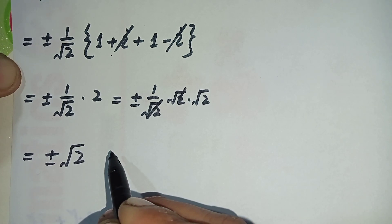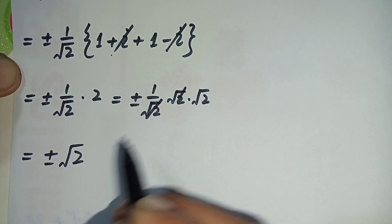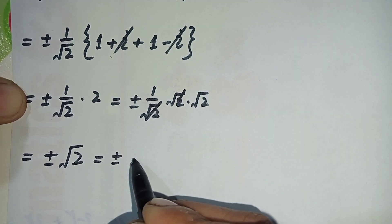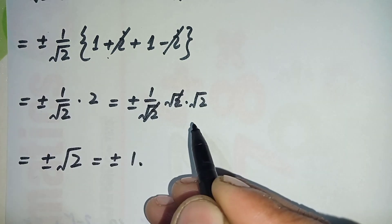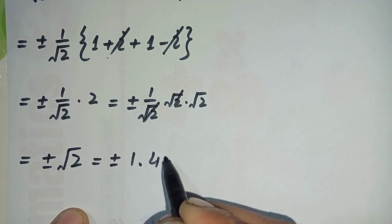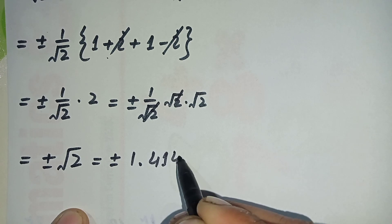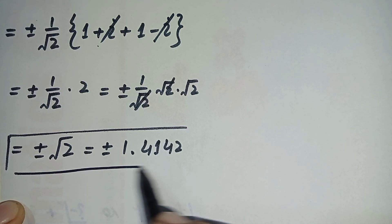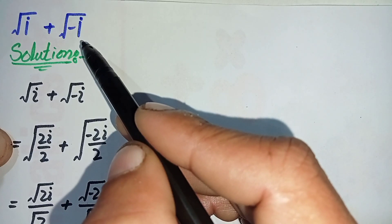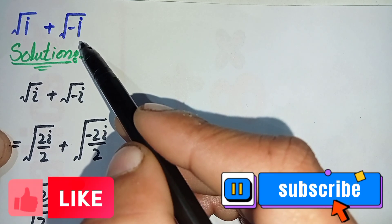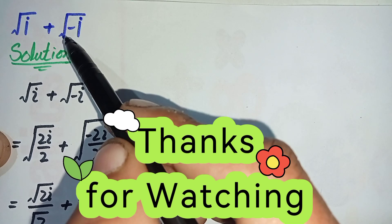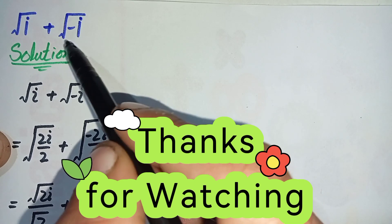Plus or minus square root of two is our final answer. If we calculate its numerical value using a calculator we get approximately plus or minus 1.414. This is our required and final answer to this nice square root math problem. Don't forget to subscribe to our YouTube channel for more interesting math videos. Thank you so much for watching, take care, see you in the next video, bye bye.